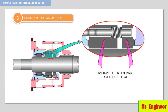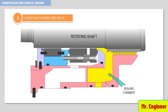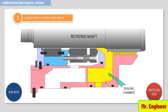Let's now have a closer look at the liquid film sealing. This is a zoom on the lower part of the seal, with the process side on the right and the atmospheric side on the left. The flow of process gas, which is to be sealed, is restricted by labyrinth teeth, and it enters the sealing chamber.